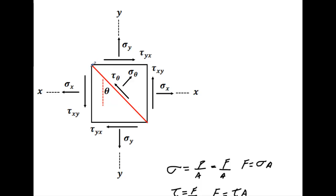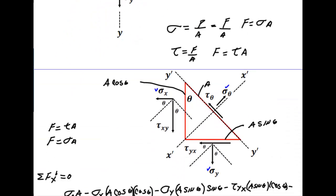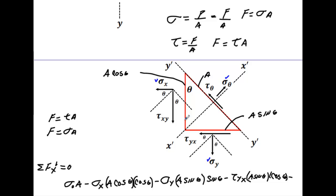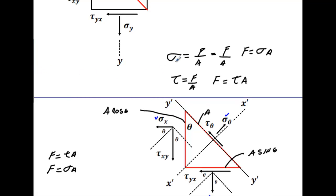Now I'm going to look at this element here. I've created a normal coming off of that surface going this way, which I call x-prime, and a parallel coming off this way, which I call y-prime. I've also created a little axis around each of these to make it easier to determine whether to use sine or cosine.